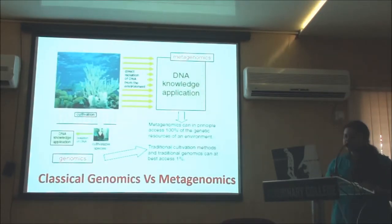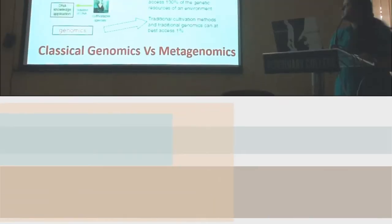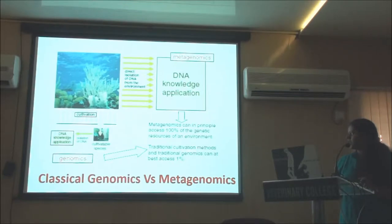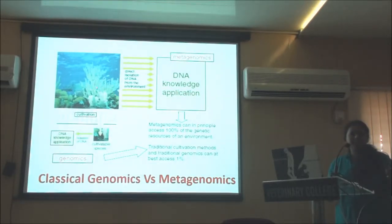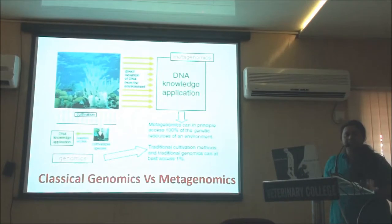This slide explains the difference between classical genomics and metagenomics. In classical genomics, we were restricted to the study of a single microbe rather than the whole community — selecting an environmental niche like the deep sea, isolating a cultivable species, and applying DNA analysis. In metagenomics, we go for direct isolation of DNA from the environment, like the Sargasso Sea project where DNA was isolated from a glass full of seawater. This approach can in principle access 100% of genetic resources present in the environment and tells us the abundance of microbes present rather than focusing on a single microbe.